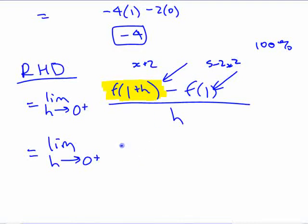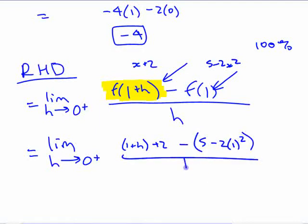So this is x plus h, or actually 1 plus h, sorry, because we're using that plus 2, right? Minus 5 minus 2 times 1, and I should put brackets, over h.